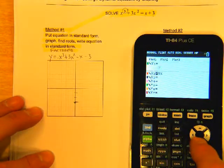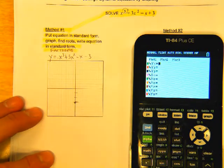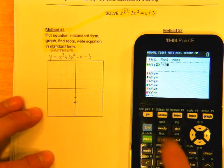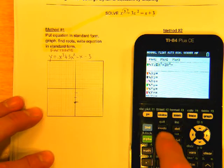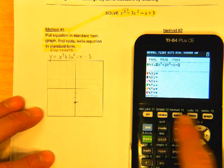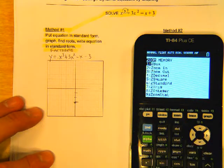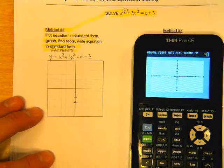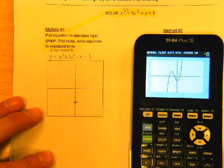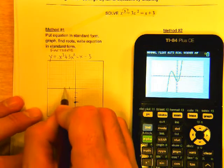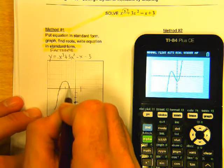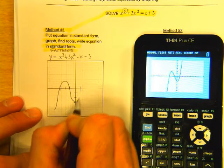All right, so in the calculator, x to the third plus 3x squared minus x minus 3. And I'm going to do a zoom 6, a zoom standard, to reset my window. And, well, this is a pretty nice looking graph. It looks kind of like that, doesn't it?